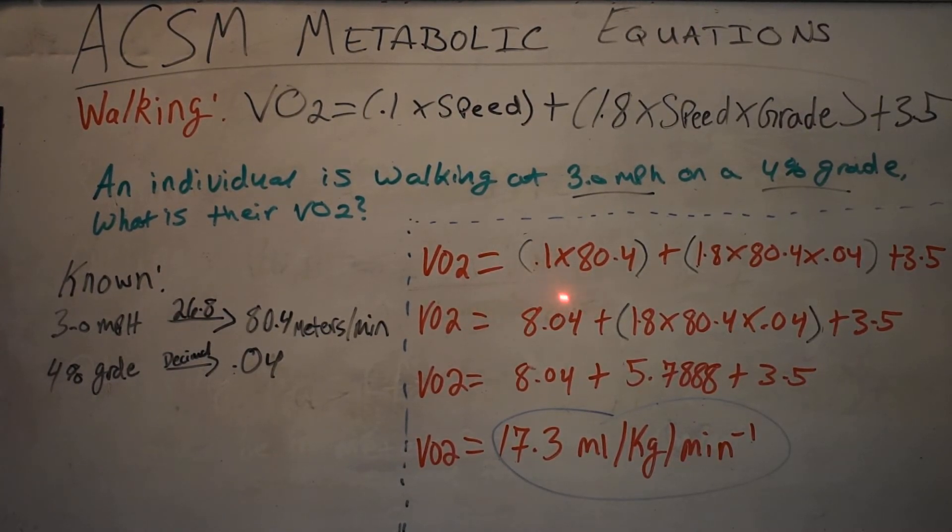Step number two, what I'll do is just do this part first. We have two sets of parentheses, so we can do these separately for now. 0.1 times 80.4 equals 8.04.